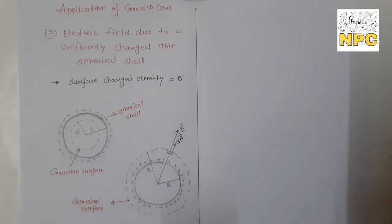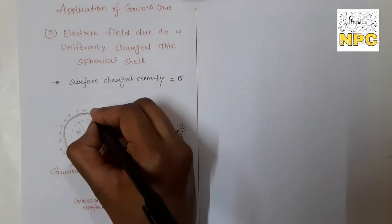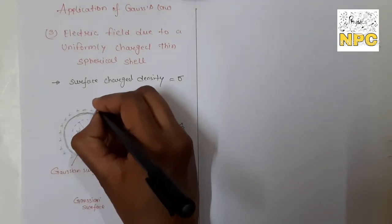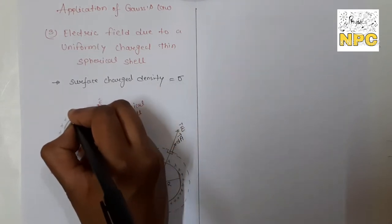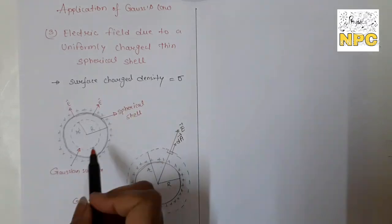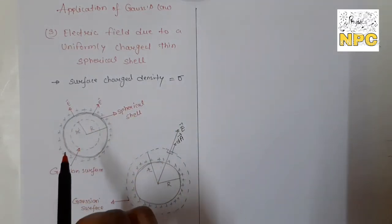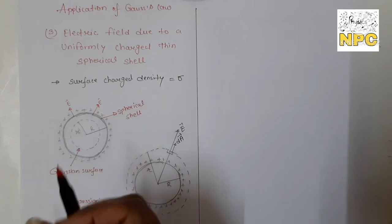The obvious thing is that the electric field is the same at every point on the Gaussian surface. If the curved surface is symmetric, the electric field will be the same at each point. If this point is perpendicular to the area vector, the electric field will be the same at every point, making the calculation straightforward.